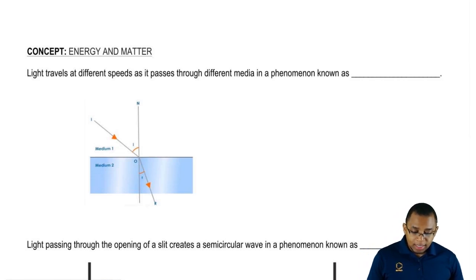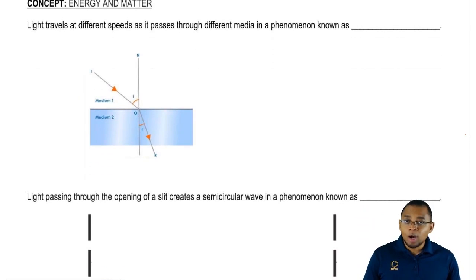First things first, we're going to say that light and matter travel differently as they pass from one medium to another medium. Light travels at a different speed as it goes from air to water.